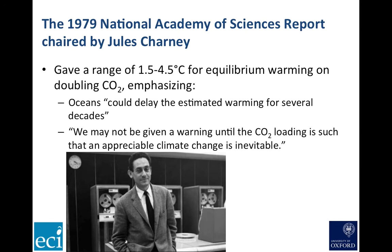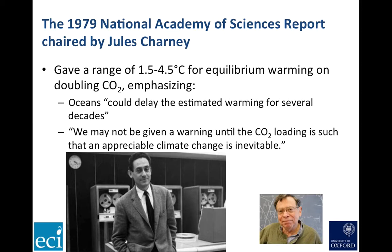Drawing on a range of lines of evidence, including the results of these early general circulation model experiments, the 1979 National Academy of Sciences panel, chaired by Jules Charney, gave a range of one and a half to four and a half degrees for the equilibrium warming on doubling carbon dioxide concentrations. And in words that I strongly suspect can be traced to Carl Wunsch, they also noted that the oceans could delay the estimated warming for several decades, and specifically drew attention to the fact that it might be some time before the impact of rising carbon dioxide was detectable in the surface temperature record.